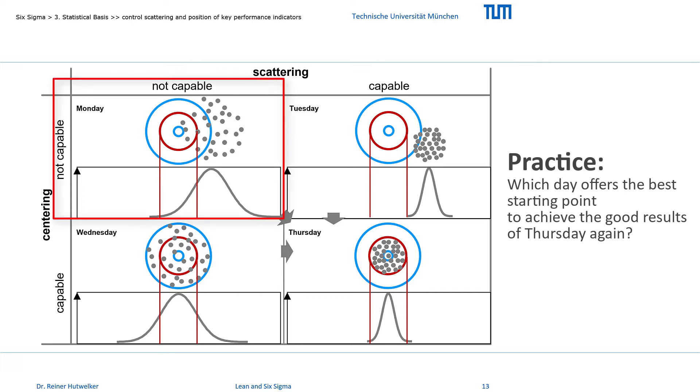We would probably not start with Monday's settings. But what about Wednesday? We have a large spread, but we already produce about 68% suitable cookies right away. If we start with Tuesday's settings, then we only produce scrap. But we have already achieved a very small spread.